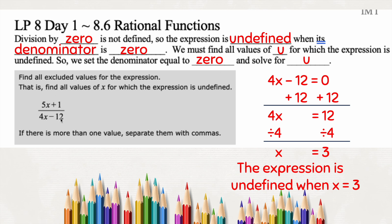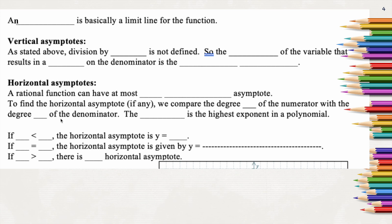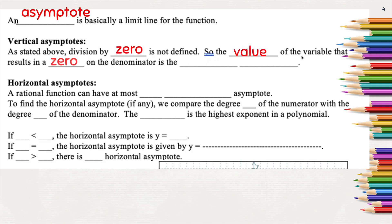They're just having you practice this idea because on the very next screen we're going to start talking about graphing these, and we need to know what these limits are when we graph. An asymptote is basically a limit line for the function — exactly what we were just talking about. We have two types: vertical, meaning it goes up and down, or horizontal, meaning it goes side to side. The value of the variable that results in zero in the denominator is the vertical asymptote.